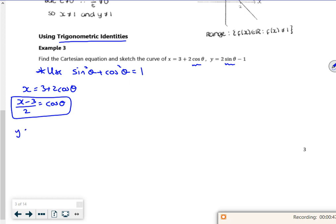But if I look at the y, if I add on the 1, divide by the 2, that gives me an equation to replace sin θ. So sin²θ becomes (y+1)/2 all squared. Cos²θ becomes (x-3)/2 all squared.